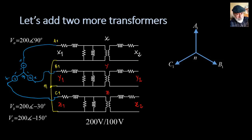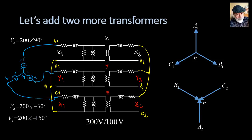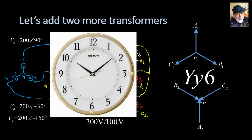Look at this other possibility: I take the same three coils and connect them like this — X2, Y2, and Z2 — this time joining them by the dots. Which terminal is A2? A2 must be connected to X2, so it is the one on the bottom right. This is a Y in the primary, Y in the secondary — so it's a YY — but this time there is a phase shift between neutral-to-A1 in the primary and neutral-to-A2 in the secondary.